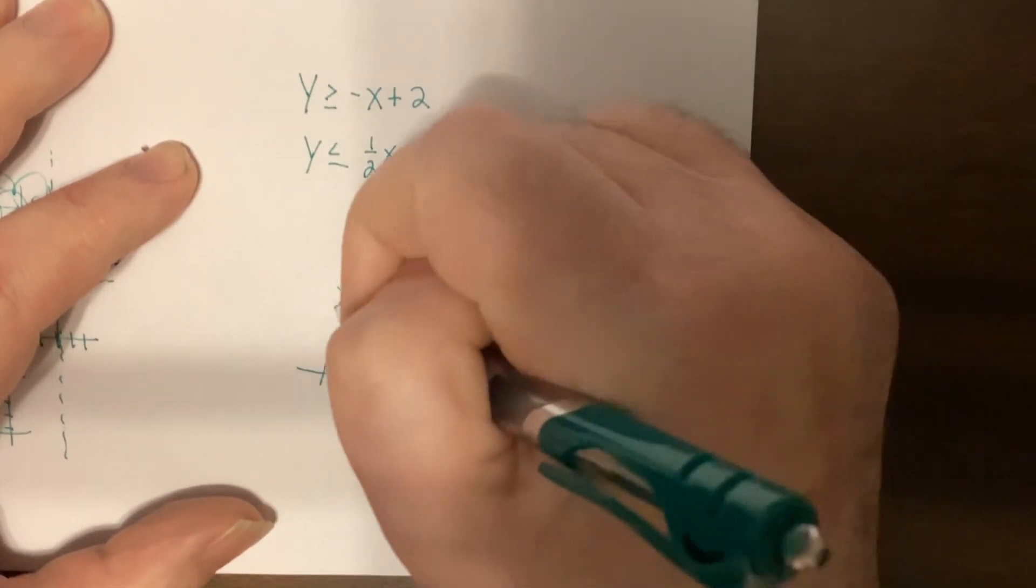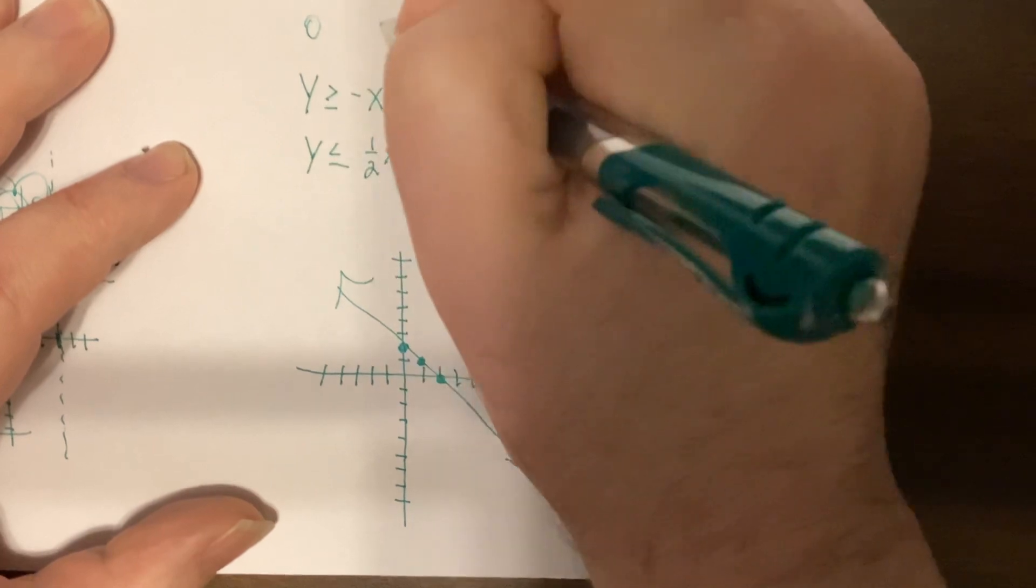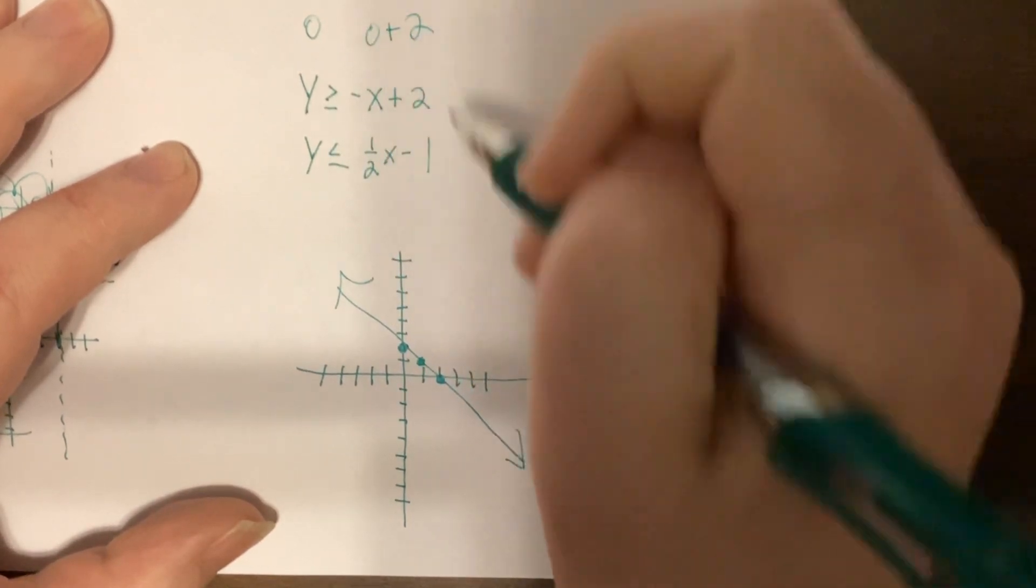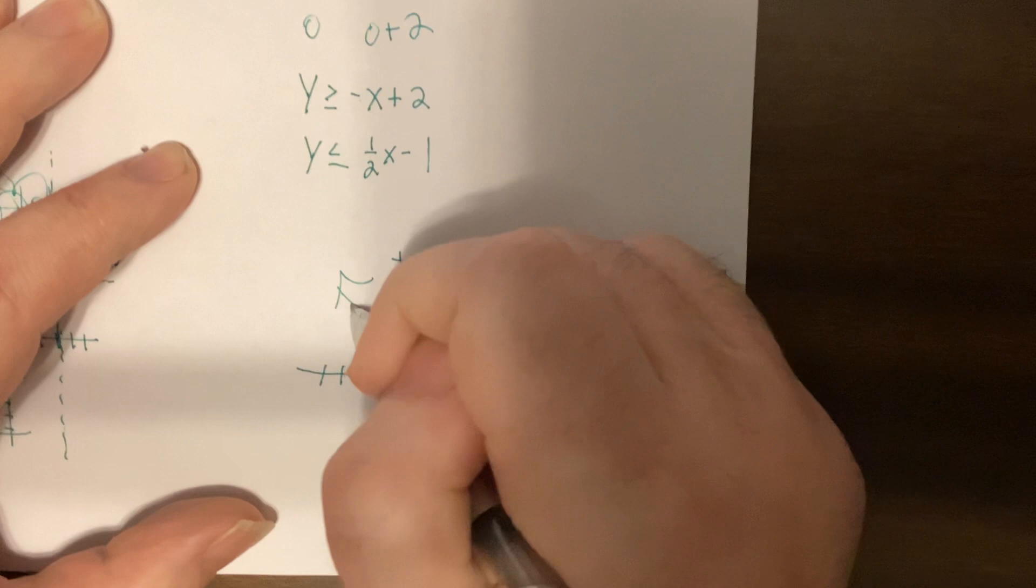Solid. Put in zero, zero. Is zero greater than or equal to zero plus two? And you'd say false. Zero is not bigger than two.